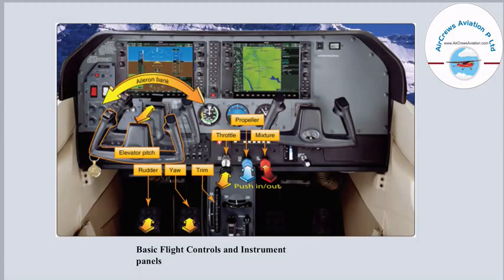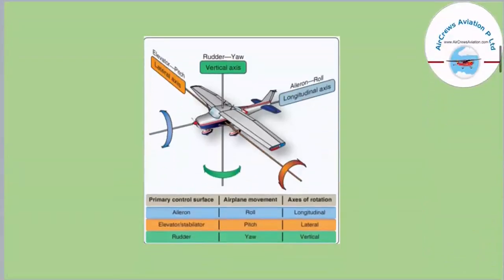This is the basic flight control and instrument panel. An aircraft needs three basic controls — primary control surfaces named aileron, elevator or stabilizer, and rudder. The aileron is on the longitudinal axis of rotation and is used for roll movement. The elevator or stabilizer is along the lateral axis and is used to pitch the aircraft up or down. The rudder is along the vertical axis of rotation of the aircraft.